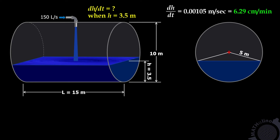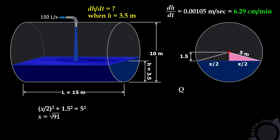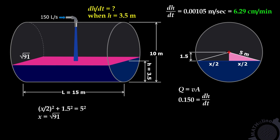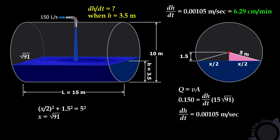From the cross-section, the distance between the center of the circle and the water surface is 1.5 meters. Applying the Pythagorean theorem: (x/2) squared plus 1.5 squared equals 5 squared. Solving for x — the width of the water surface — gives x equals the square root of 91. Discharge equals velocity times area: discharge is 150 liters per second or 0.15 cubic meters per second, velocity is dH/dt, and area is 15 times the square root of 91.